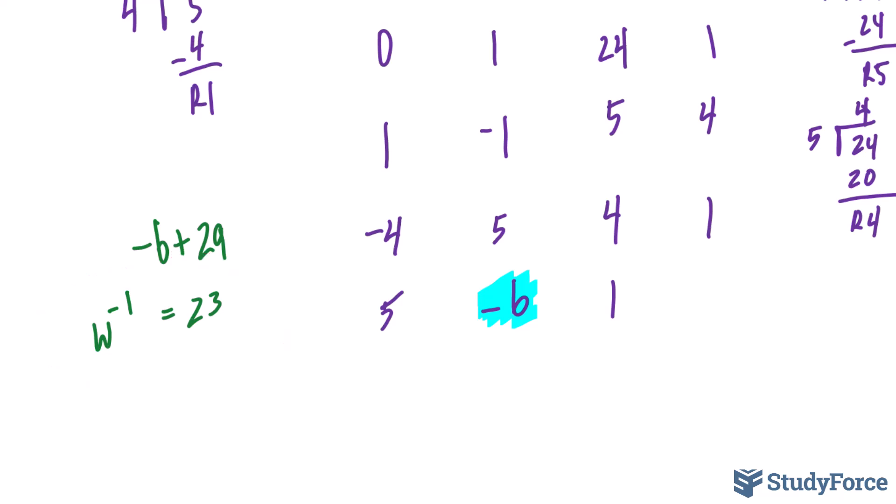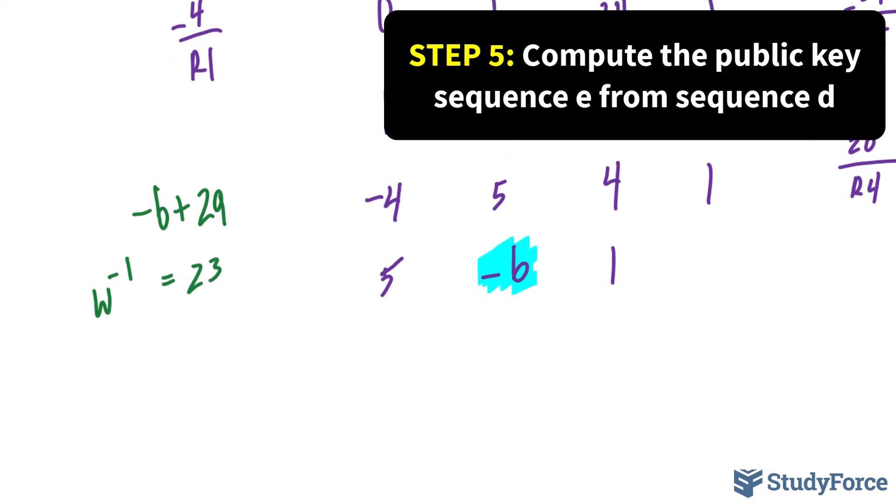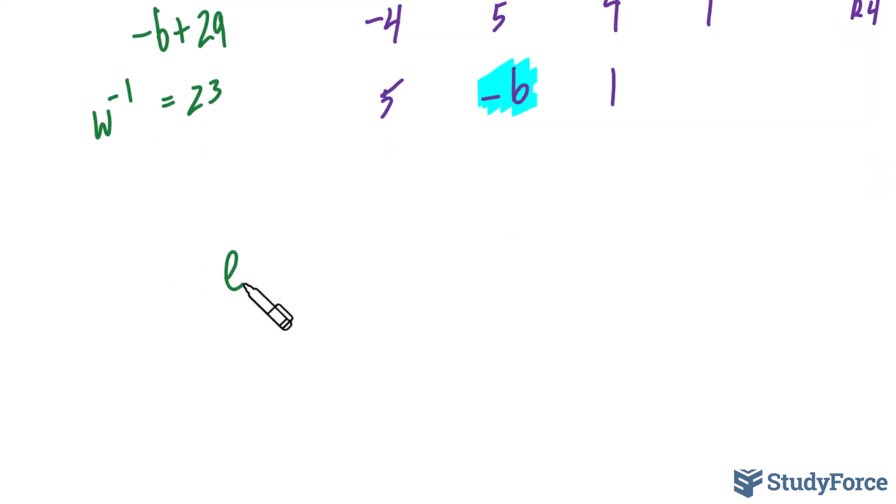We now have all three components of our private key. The inverse of W, M, and the super-increasing sequence. Now for the last step in generating our public key, for each term found in our sequence D, we have to compute a new sequence which will serve as our public key by doing the following computations. We'll call this new sequence E and that will be our public key sequence which will be used to encrypt messages moving forward. The terms of E are found by taking the value of W and multiplying it to each term in D, which I will call D sub i mod M. Let me show you what I mean. Remember, here's what D looked like. Also recall that W we set to 24 and M was set to 29.